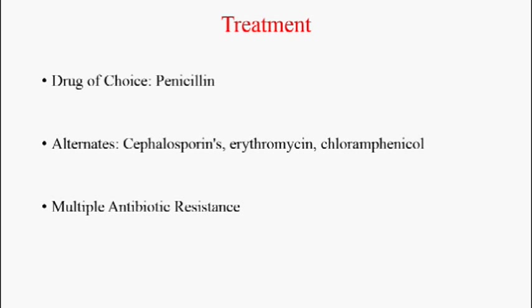Treatment: The drug of choice for Streptococcus pneumoniae is penicillin. But nowadays we are seeing resistance to penicillin in some organisms in this streptococcus group. The alternative therapies are cephalosporins, erythromycin, and chloramphenicol. Nowadays we are also seeing multi-antibiotic resistance in some groups of Streptococcus pneumoniae.